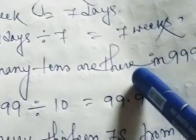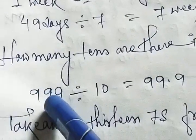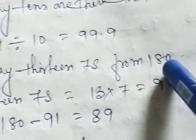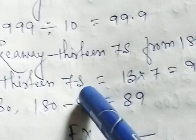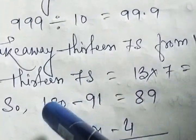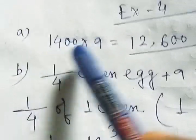Next I, how many tens are there in 999? So 999 divided by 10, answer will be 99.9. Take away 13 sevens from 180. At first 13 sevens equal to 13 multiply by 7 equal to 91. Same way, take away means subtraction, so 180 minus 91, answer will be 89.